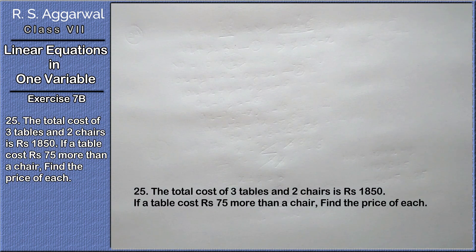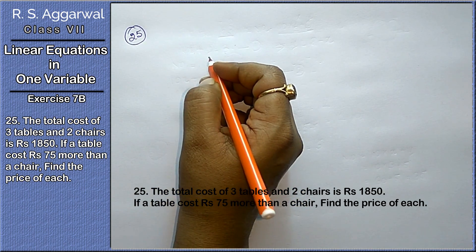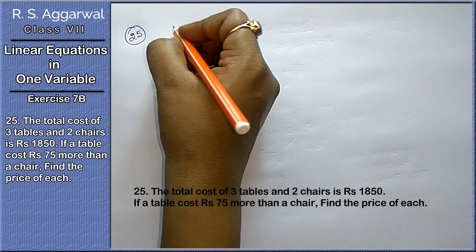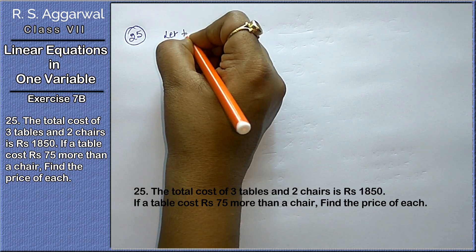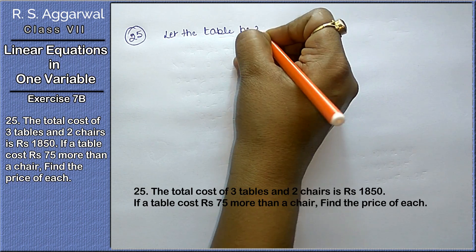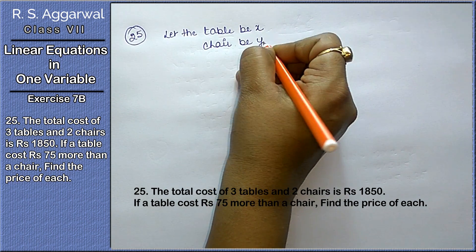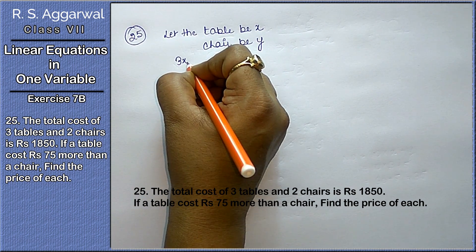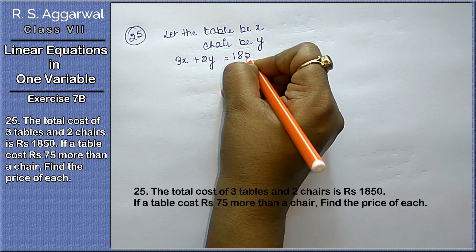Next question is 25th. The total cost of 3 tables and 2 chairs is rupees 1850. That means let the table be x and chair be y. That means 3x plus 2y equals 1850.